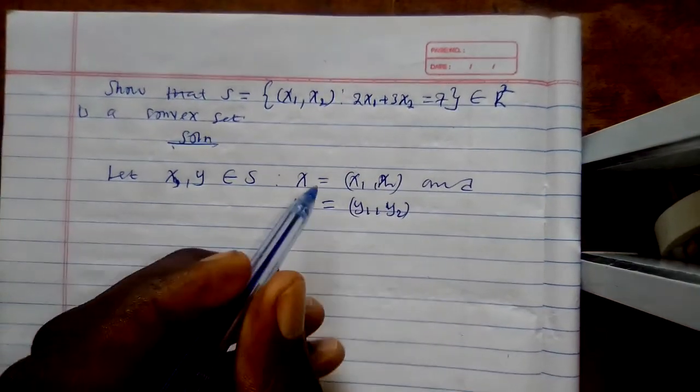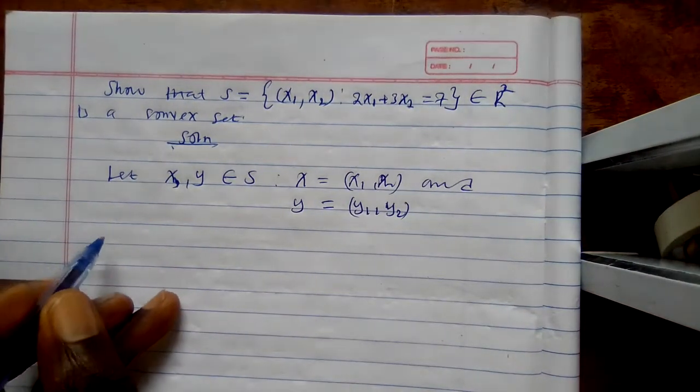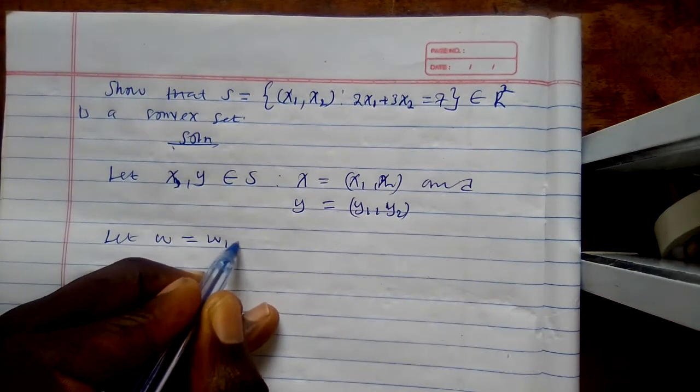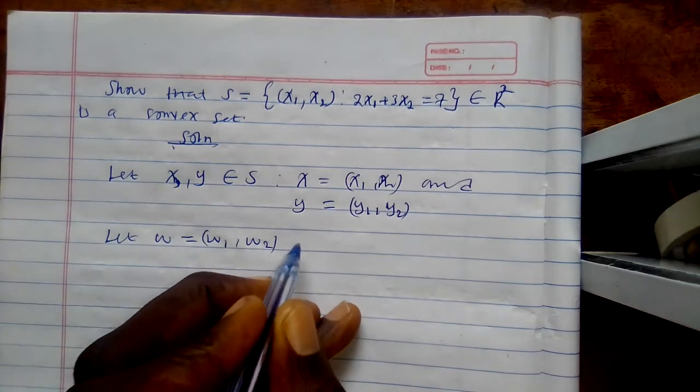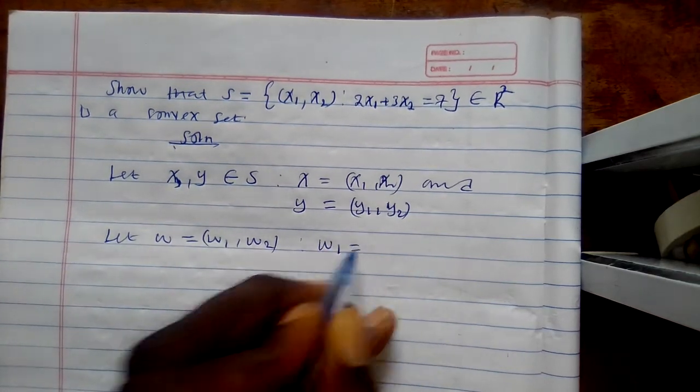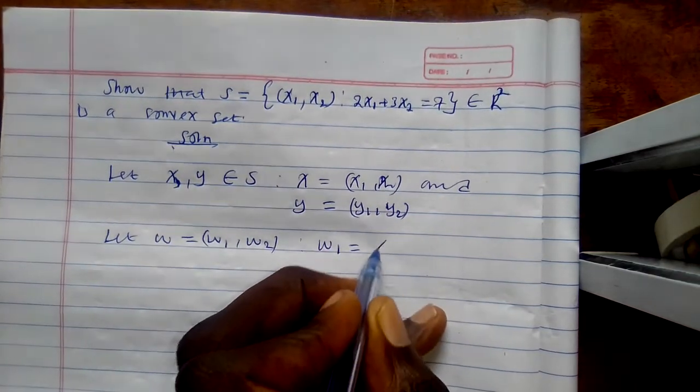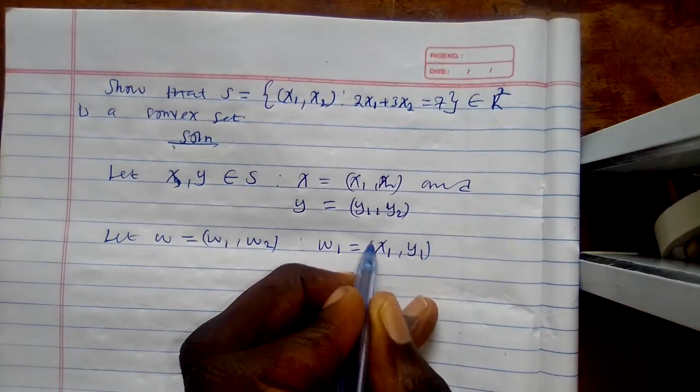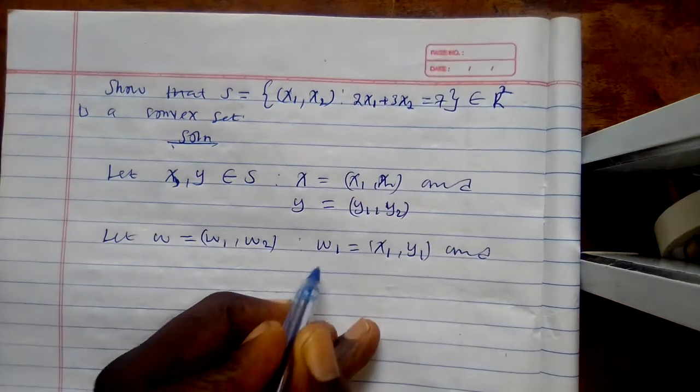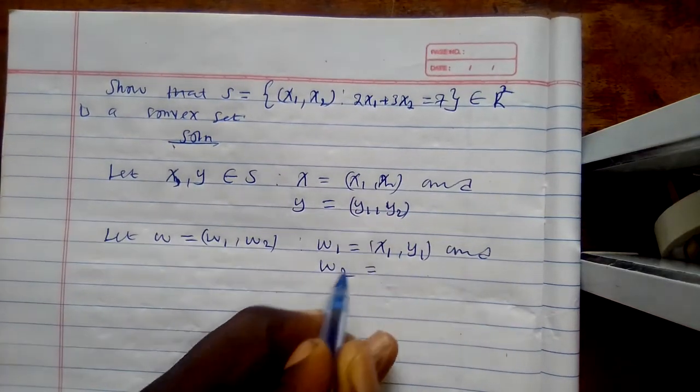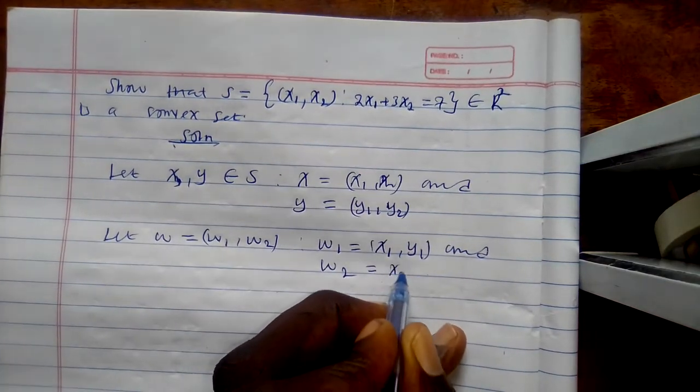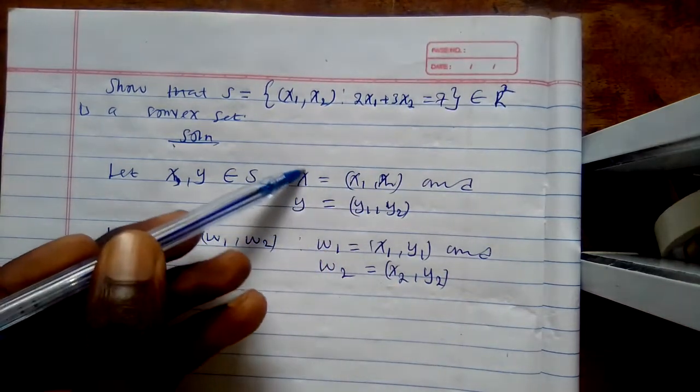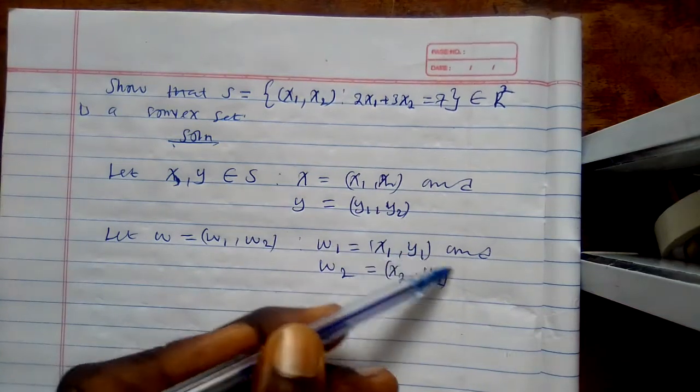Since I'm still dealing in two points, I can continue relating and say let W equal to (w1, w2) such that w1 is equal to (x1, y1) and w2 is equal to (x2, y2). So I'm now, after I've moved away from the X, I'm now dealing with these two.